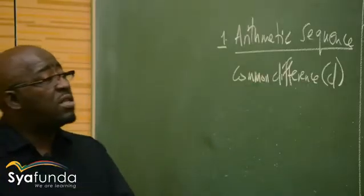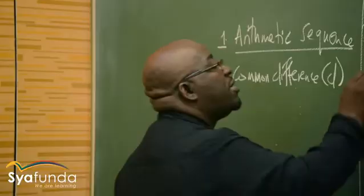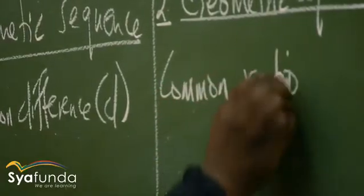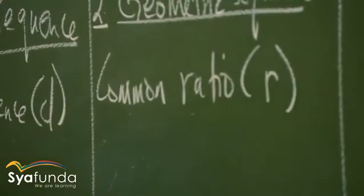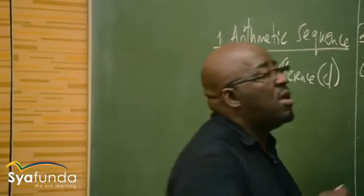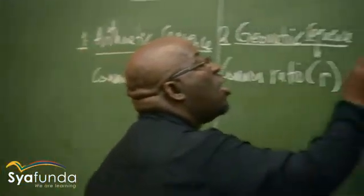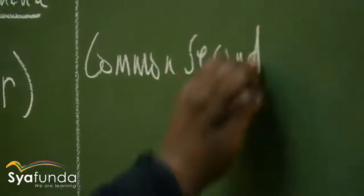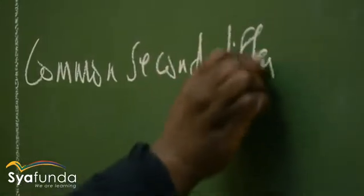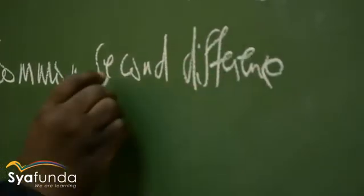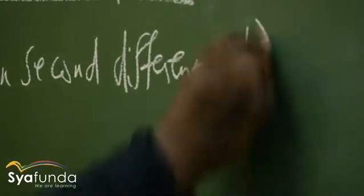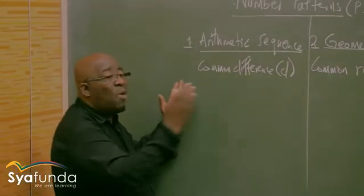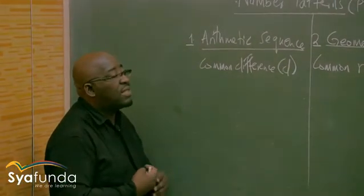The geometric sequence will have what we call the common ratio, which we refer to as r. Then the third one, the quadratic sequence, will have the common second difference — not the first common difference. So the arithmetic sequence has the first common difference, whereas the quadratic sequence will have the second common difference.